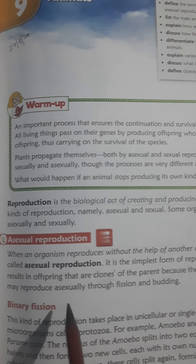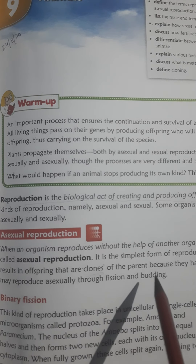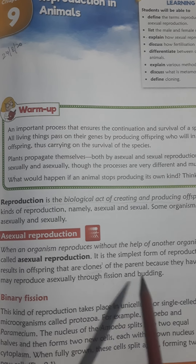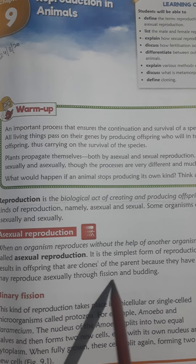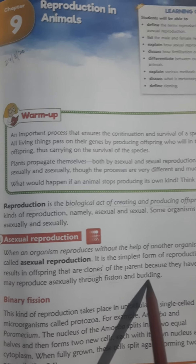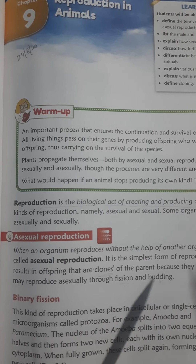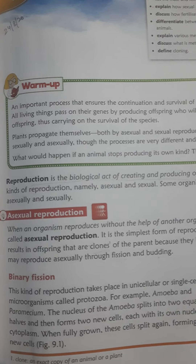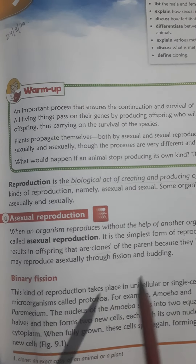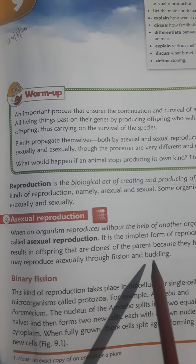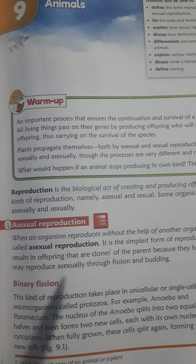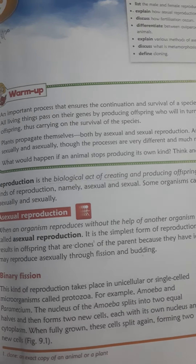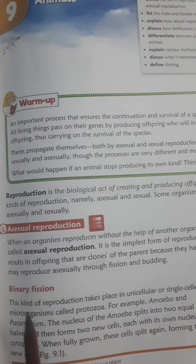Animals may reproduce asexually through fission and budding. In fission, the parent body is divided into daughter cells. In budding, a bud forms and then separates from the parent body to become a new individual.